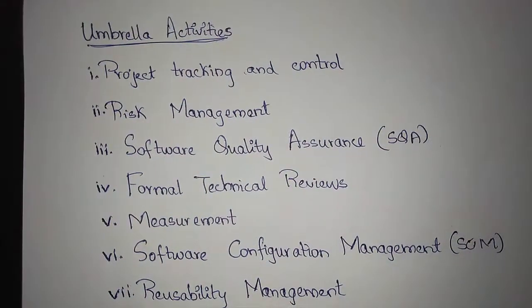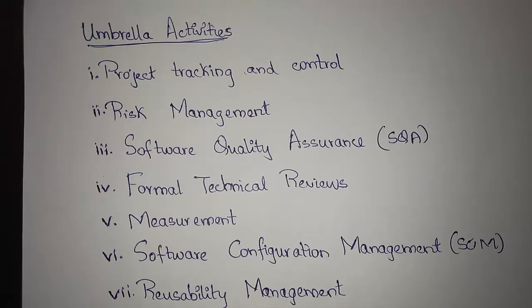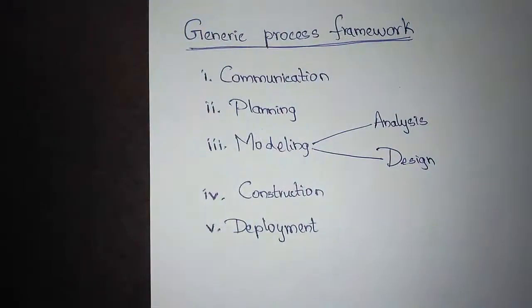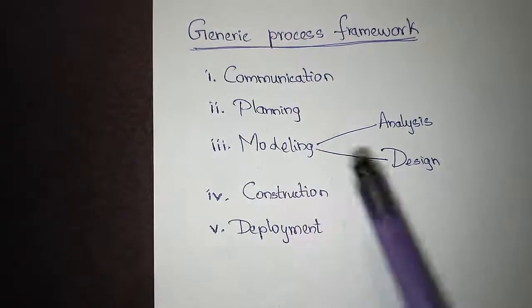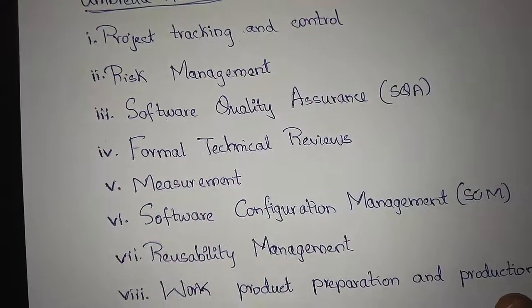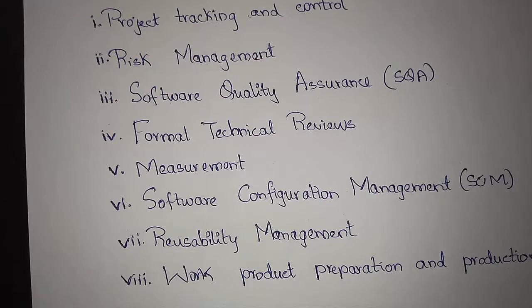Now let's understand umbrella activities in more depth. Umbrella activities take place under each process framework phase. For each process phase we have umbrella tasks such as project tracking and control, where we assess the progress of the product and take action if the project is behind schedule, and risk management, to assess risks that affect the quality of a product.